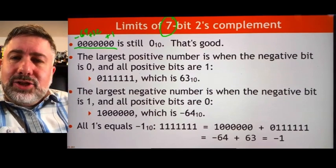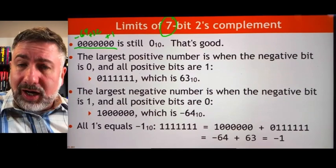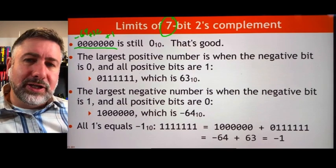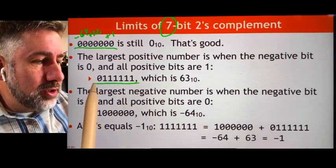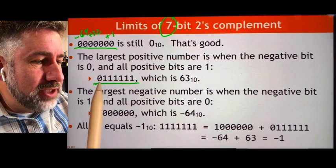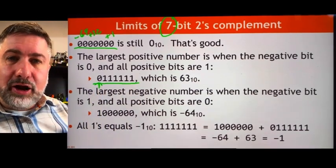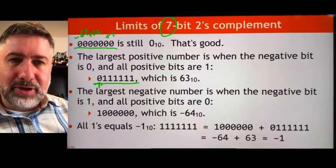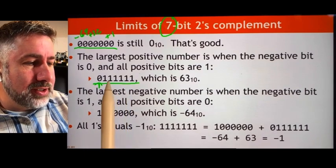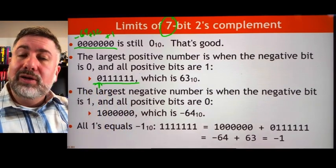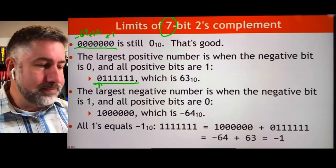If we put all value in the positive place values and no value in the negative place value, it looks like this — because only our top place value is negative, everything else is positive. So if we add all of these things up in our 7-bit representation, we get 1 + 2 + 4 + 8 + 16 + 32, which adds up to 63 in base 10.